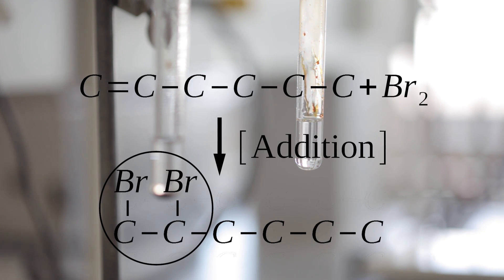Now you can see that the addition of bromine to hexine results in one clear phase.